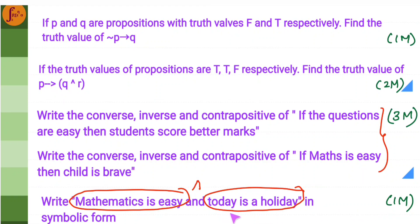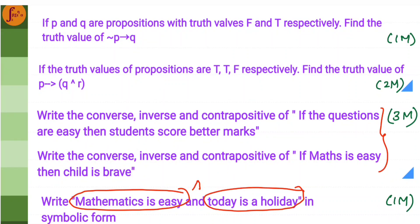In the 1 marker section, you will be given propositions in words and you have to put them in symbolic form. You take one statement, call it p, take another statement, call it q, and join them with 'and' if 'and' is given. So it becomes p ∧ q — very easy. I have also created a detailed playlist on mathematical logic for more understanding.